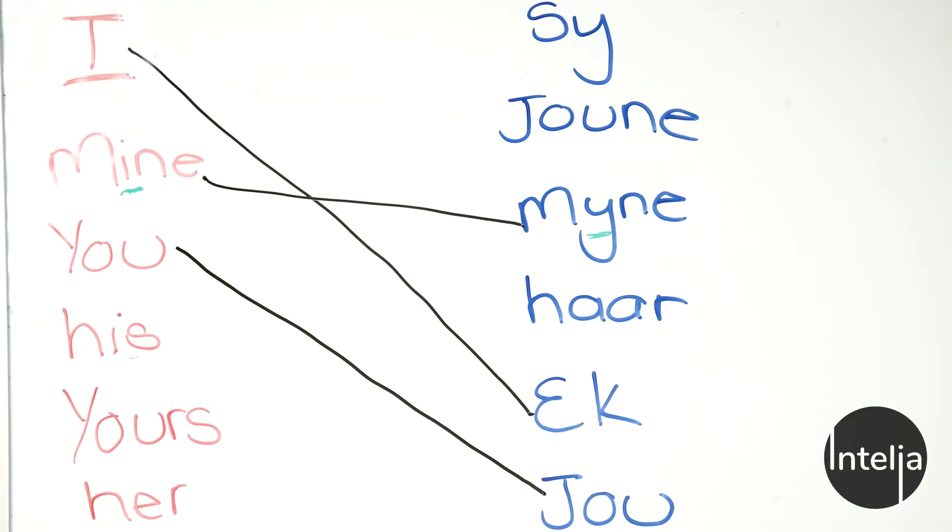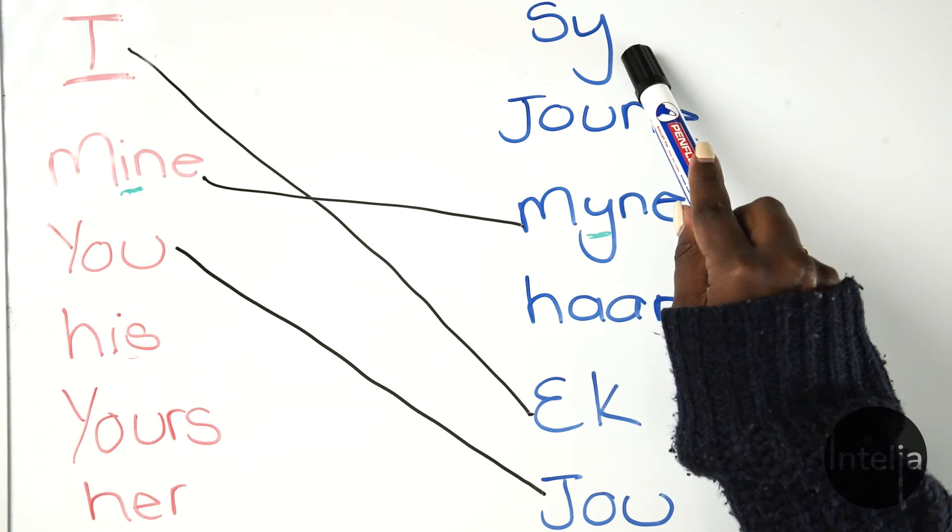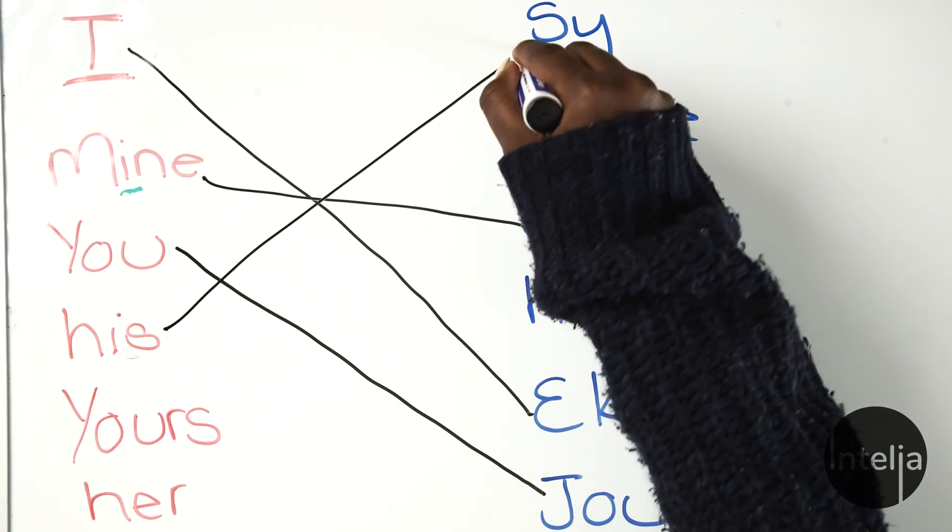Let's look at our next word, his. What is his in Afrikaans? Is that sy? Is that joune? Of is that haar? That's right, sy. So we're gonna match his with sy.